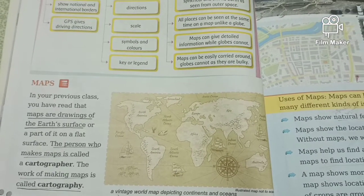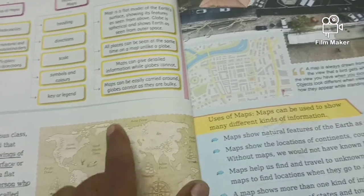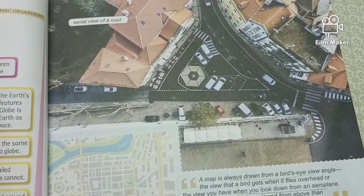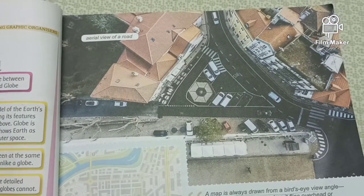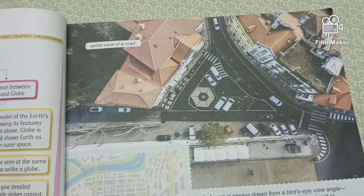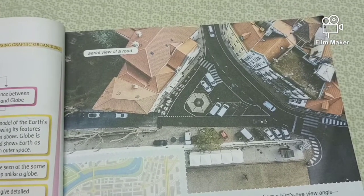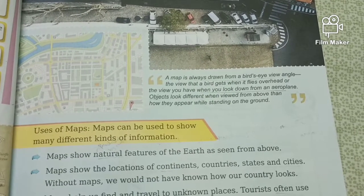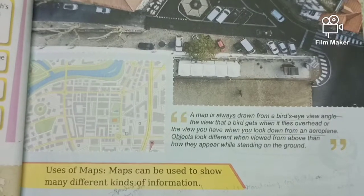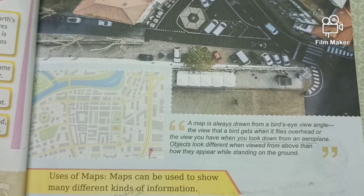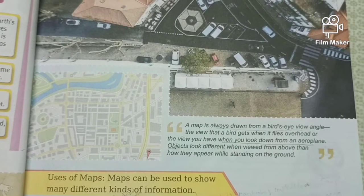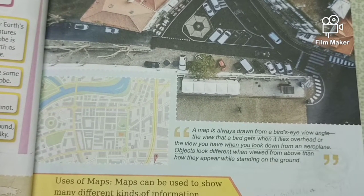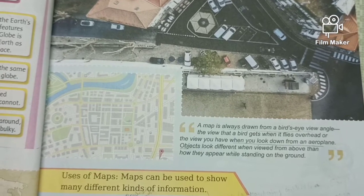In your textbook, they have given a world map where you can locate all the continents and five oceans. They have also given a picture showing an aerial view of a road — a picture taken from the sky. A map is always drawn from a bird's eye view angle. When you look down from an aeroplane, objects appear different from above than while standing on the ground.